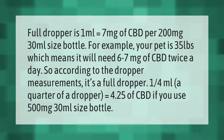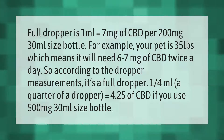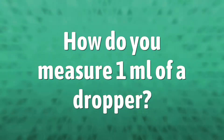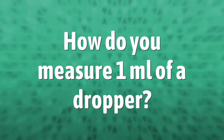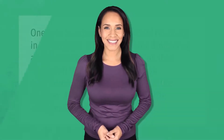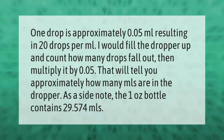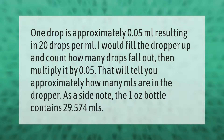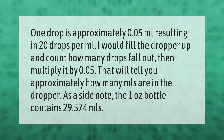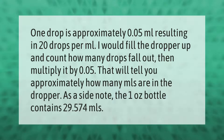If you use a 500 milligrams, 30 milliliter size bottle: one drop is approximately 0.05 milliliters, resulting in 20 drops per milliliter. Fill the dropper up and count how many drops fall out, then multiply by 0.05 — that will tell you approximately how many milliliters are in the dropper. As a side note, the one ounce bottle contains 29.574 milliliters.